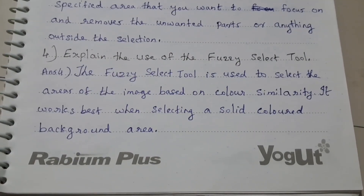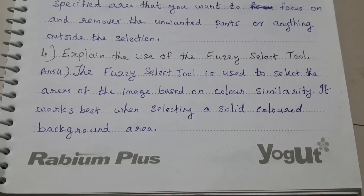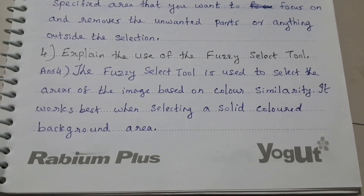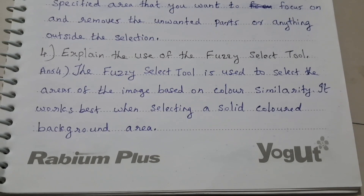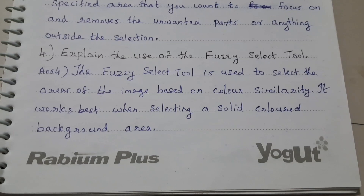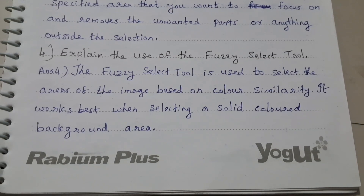Explain the use of the Fuzzy Select Tool. The Fuzzy Select Tool is used to select the areas of the image based on color similarity. It works best when selecting a solid colored background area.